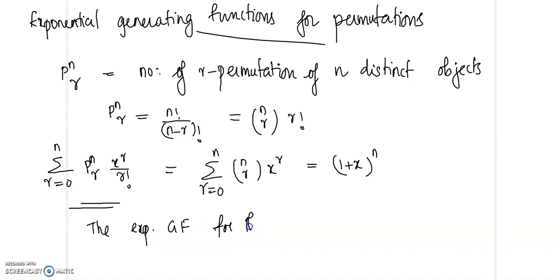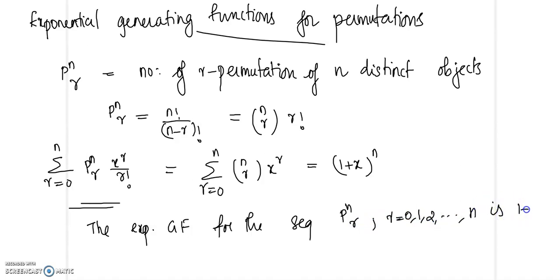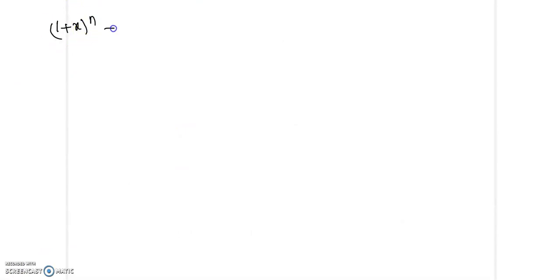The exponential generating function for the sequence P(n,r), where r equals 0, 1, 2, etc., is (1+x)^n. Now (1+x)^n can be written as (1 + x/1!) times (1 + x/1!) — that is, the factor (1+x) written as (1 + x/1!) multiplied n times.